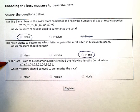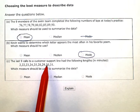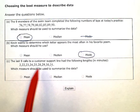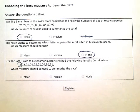And problem C here. The last nine calls to a customer support line had the following lengths: so a two-minute call, and then we have 22, 23, 24, 25, 28, 29, 30, and 31.